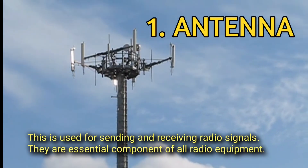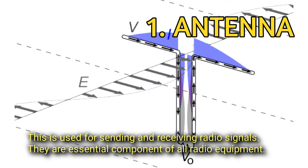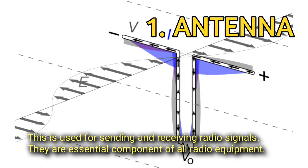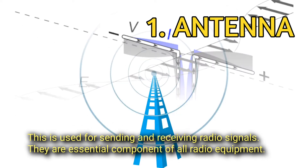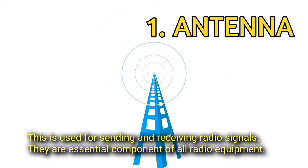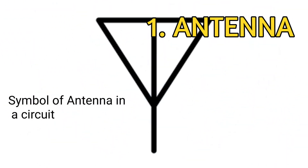Antenna. This is used for sending and receiving radio signals. They are essential components of all radio equipment. The symbol in a circuit is represented accordingly.